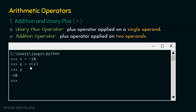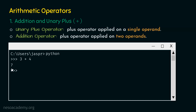If we type y and hit enter, we get minus ten as a result. Note that the parentheses are optional — we can also write plus x directly — but parentheses make the code more readable, so they are the preferred choice. Now let's understand how the addition operator works. If we perform three plus four, three and four are the two operands and plus is the binary addition operator. Hitting enter gives us seven as a result.